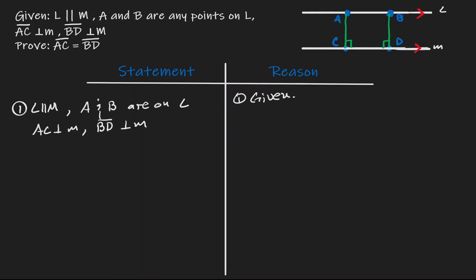Now let's use the fact that L and M are parallel to each other. Remember that this is line L and this is line M. If those two lines are parallel, we can think of this green line as a transversal. If that is a transversal, then we know that consecutive angles are supplementary. So if the intersection at C is 90 degrees, then the intersection at A will also be 90 degrees. So our second statement is that angle A is equivalent to 90 degrees, by properties of parallel lines.